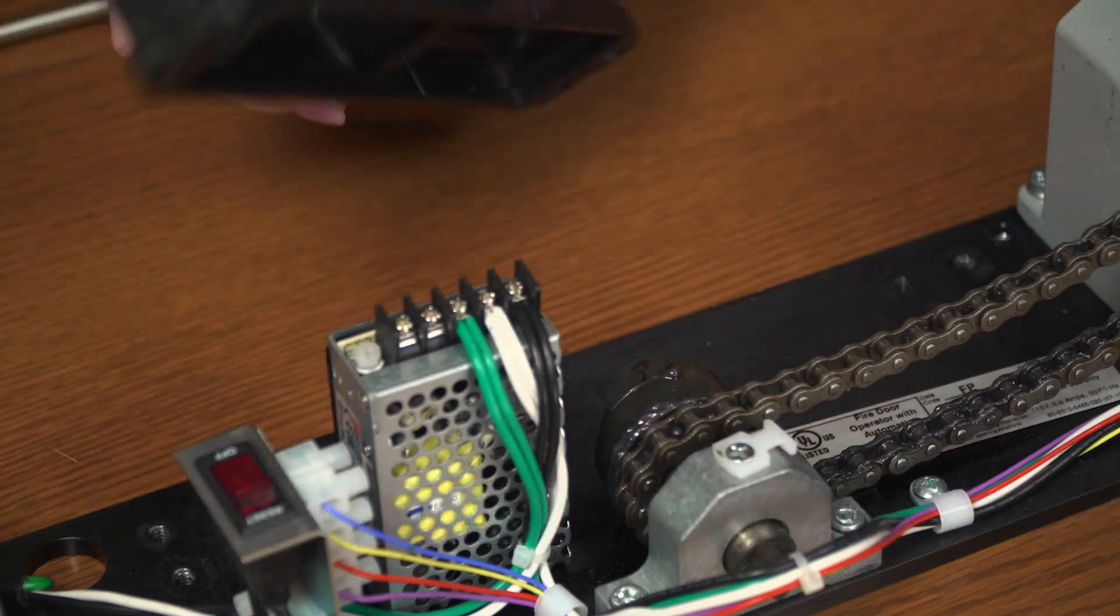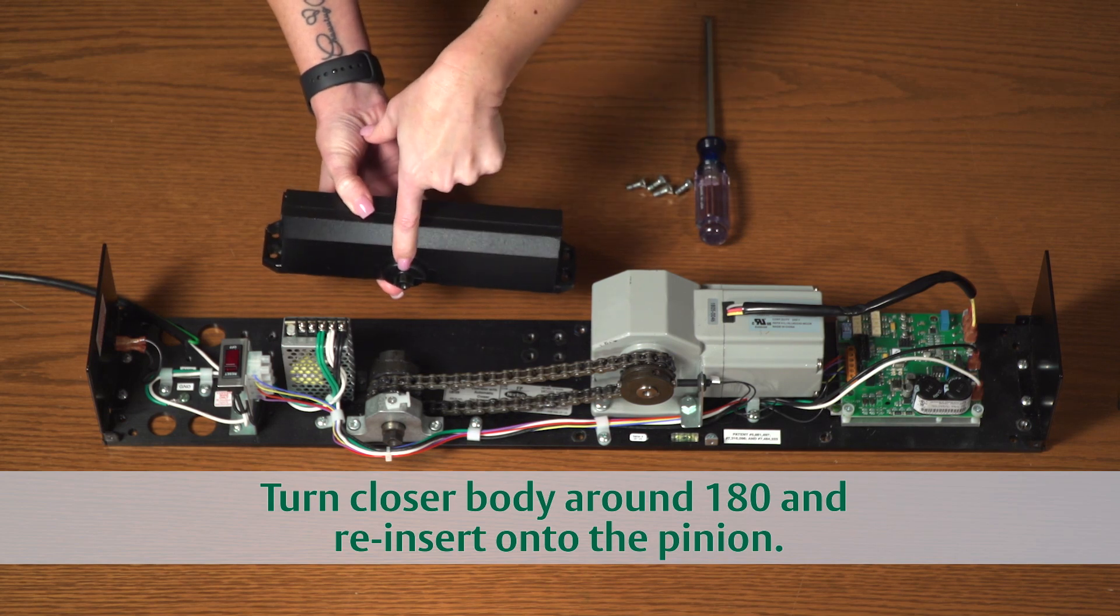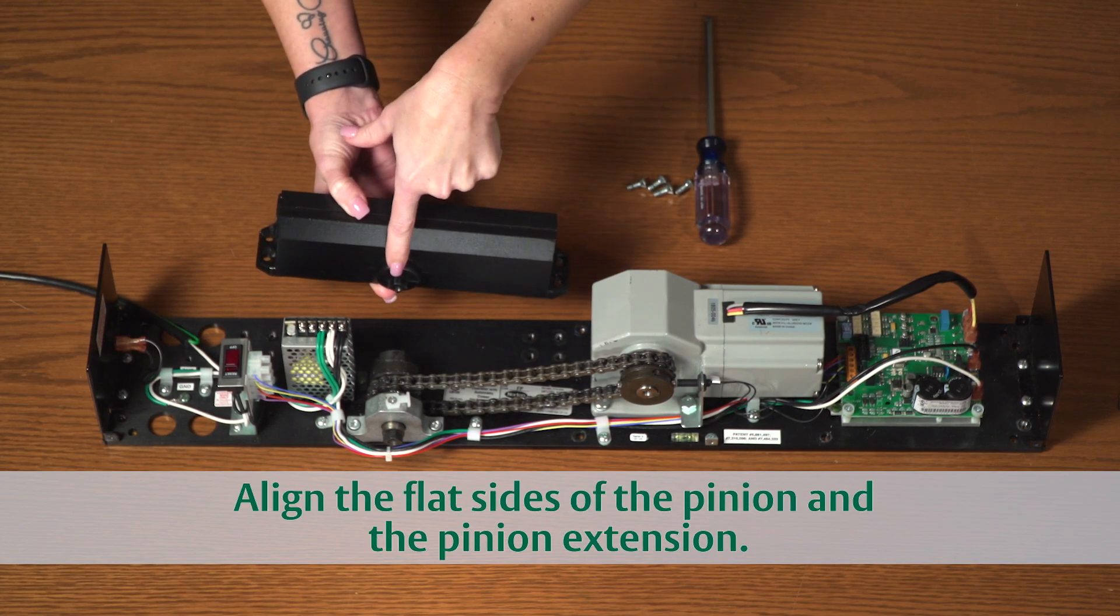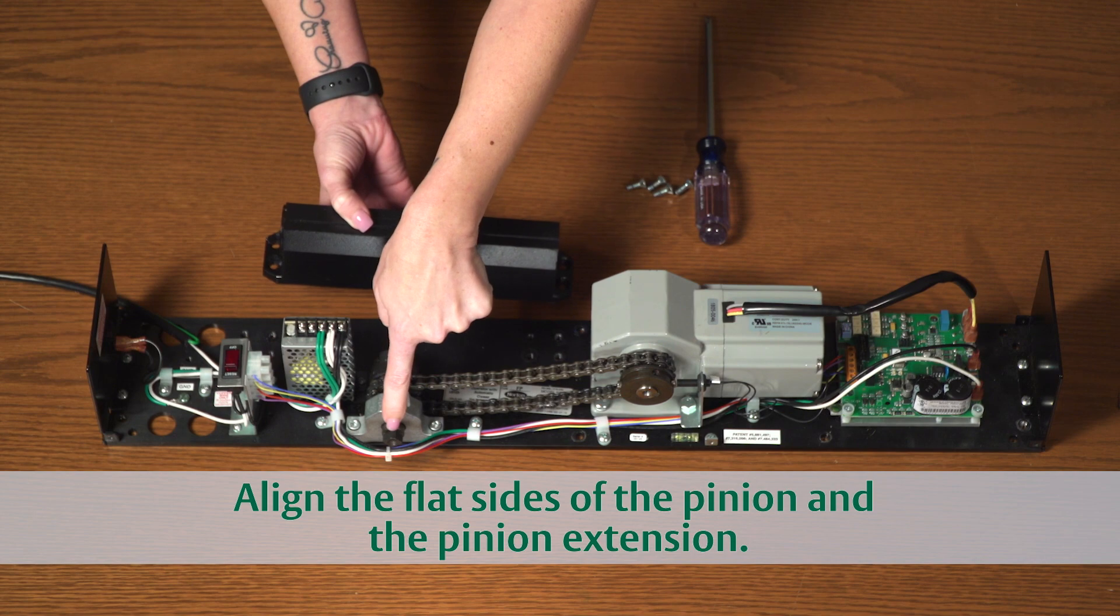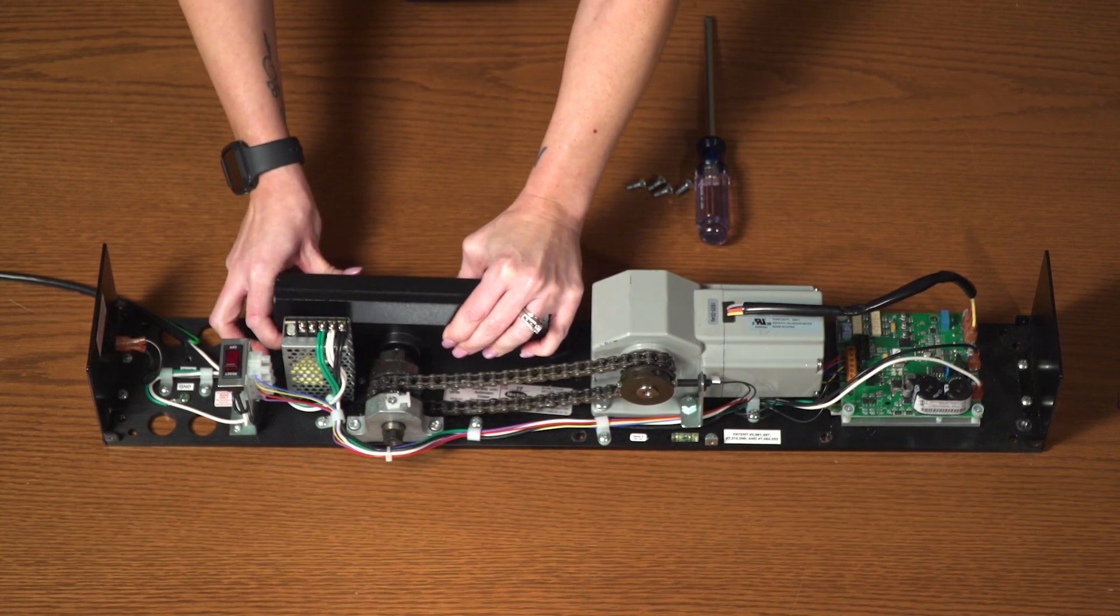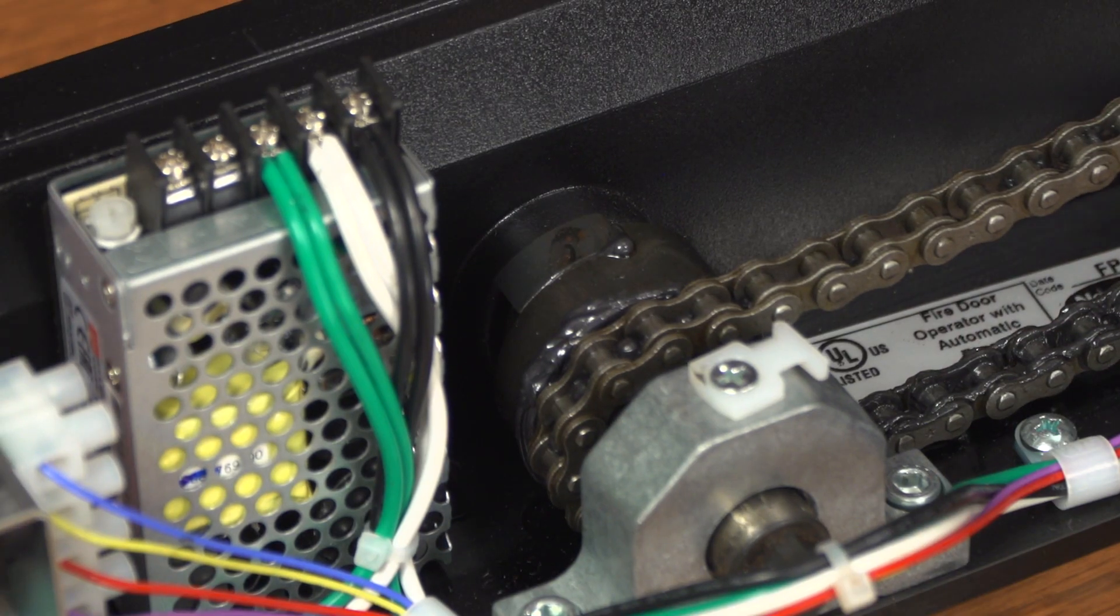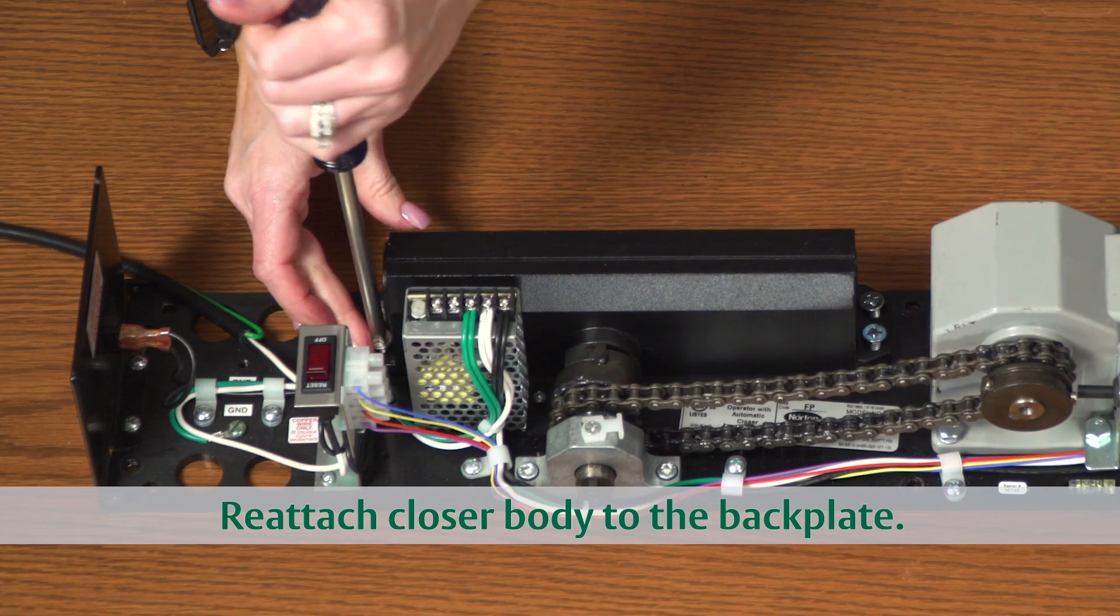Turn the closer body around 180 degrees and reinsert on the extension, keeping the flat side of the pinion aligned with the flat side of the extension. It may require some slight adjustments, but should slide fairly easily into place. Secure the closer body to the back plate with the four screws.